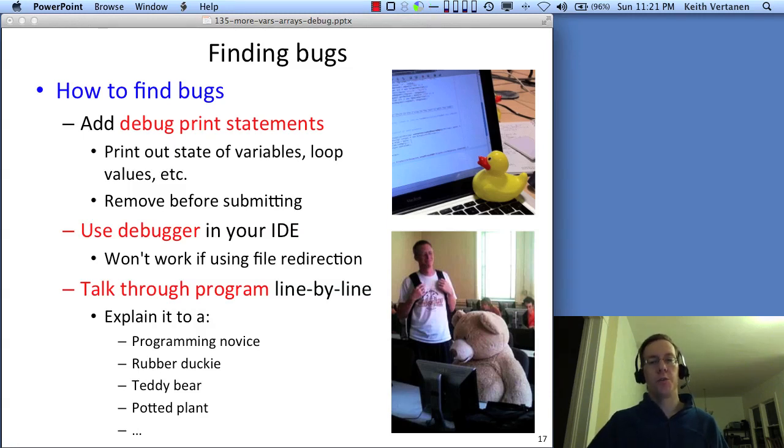Please remove these things before submission, though. We don't want to run your program and see 10 pages of debug output. You can use the debugger in your IDE. So Eclipse, I've shown you some examples of using the step debugger. And so that works pretty good. In some of our assignments, though, we'll be using redirection, so reading our input from a file. And in those cases, you won't be able to use the integrated debugger. So then using something like debug print statements is your main method for tracing program execution.